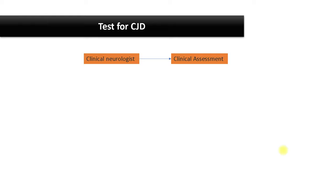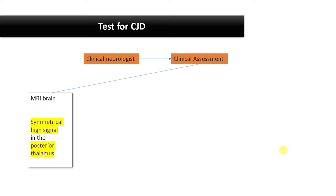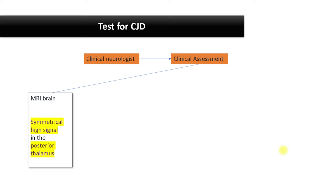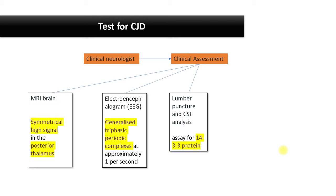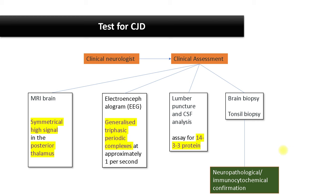Every case of suspected CJD should be discussed with the National CJD Research and Surveillance Unit or National Prion Clinic. Clinical neurologists can help with the diagnosis. Tests that can be used include MRI brain, which may show typical changes like symmetrical high signal in the posterior thalamus; EEG, which may show generalized triphasic periodic complexes at approximately 1 per second; and CSF analysis for 14-3-3 and tau protein. The diagnosis can be confirmed by brain biopsy. Genetic tests can look for specific mutations responsible for genetic CJD.